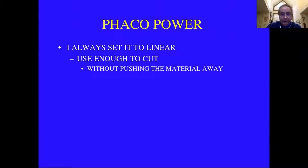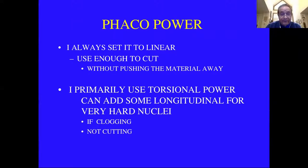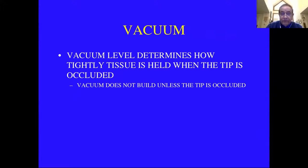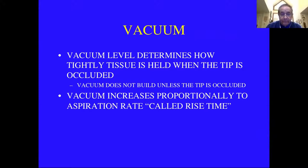You want to use enough power to cut the material without pushing the lens material away — if it's pushing away, increase the power. You don't want to stay in phaco for a long time because it heats up quickly. I primarily use torsional power with very hard nuclei; it often helps to use some longitudinal along with it if it's clogging or not cutting at maximum power. Vacuum level depends on how tightly tissue is held when the tip is occluded — you don't get any vacuum build unless the tip is occluded. Vacuum increases proportionally to the aspiration rate; this is called rise time.